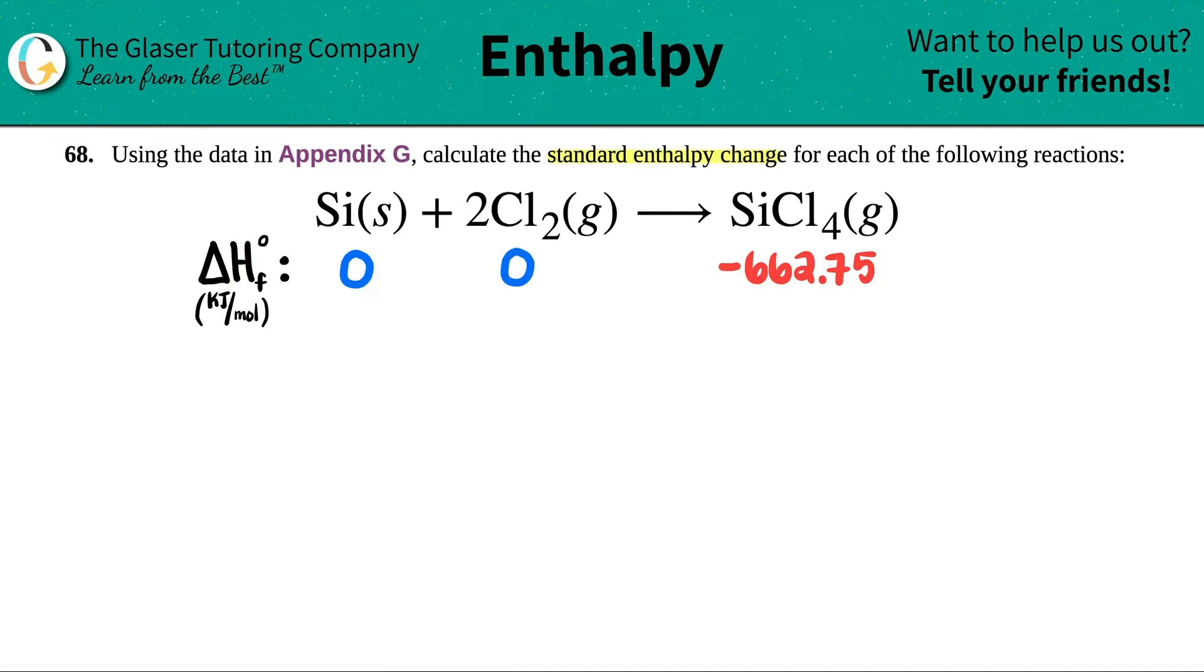Now how do we find the enthalpy change? Well, it's an easy formula. If you want to find the delta H of an overall reaction (Rxn is reaction), all you have to do is take the sum of the products of the delta H's minus the sum of the reactants. This little symbol just means sum, add them up.